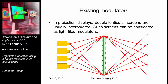Before discussing how to construct modulators, let us look at useful examples of existing modulators. In projection displays, there are usually double lenticular screens incorporated. There are many ways to construct such devices, but basically there is some kind of screen covered with lenticular sheets, which can be thought of as a device to modulate the light field.